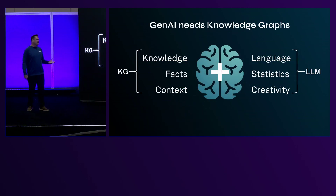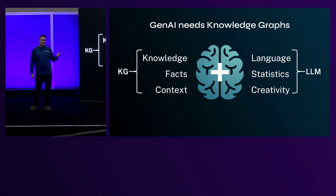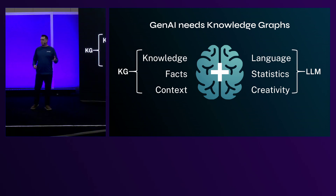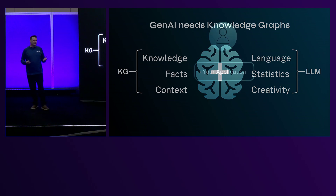Generative AI needs knowledge graphs. I like to think about it as separation of concerns brought together under a simple, straightforward systems architecture. Part of your architecture handles the language side — the creativity — where it's not possible to program all the different paths you need to go down. The other part manages the knowledge, facts, and surrounding context to give you accurate answers. Enter GraphRAG.